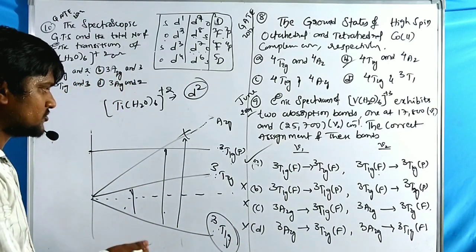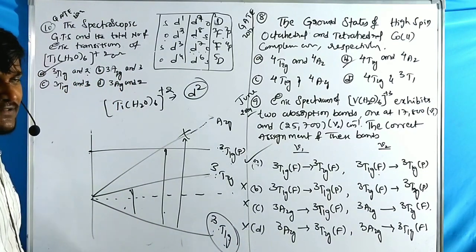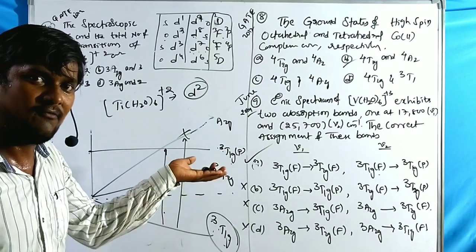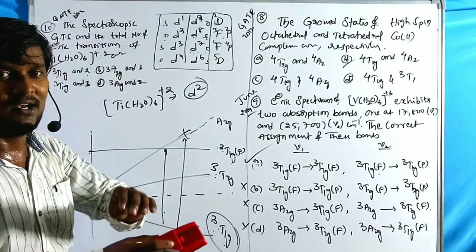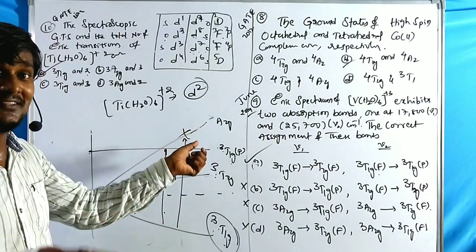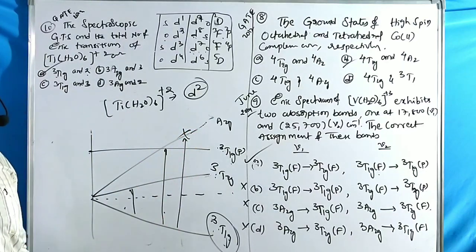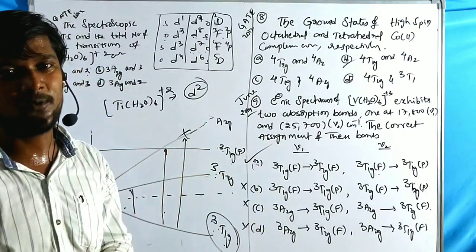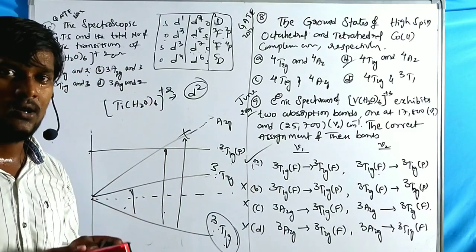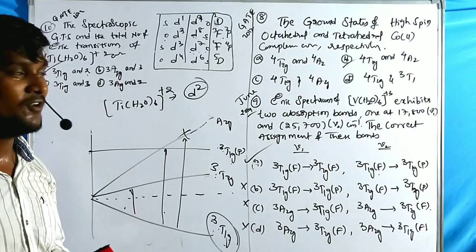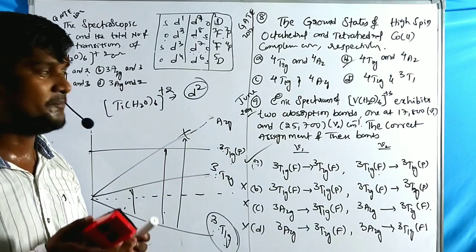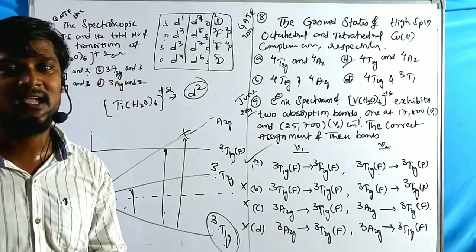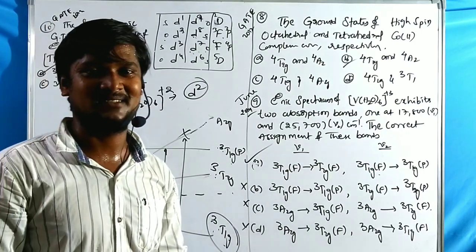For d2 configuration, only two transitions are possible due to the high energy requirement for ³A₂g excitation. Even in strong-field ligand cases, this transition is not observed. This completes our explanation of 10 problems on Orgel diagrams. Please subscribe to the channel and share with friends.